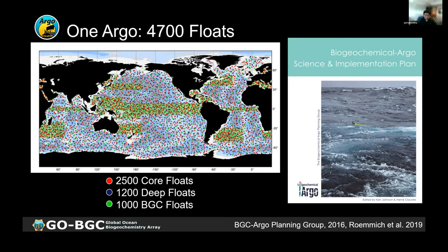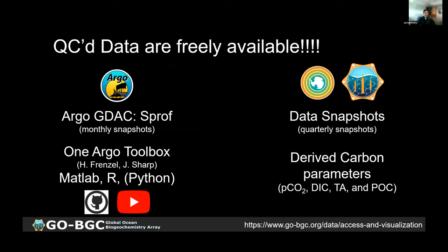The 1,000-float target size is explained in the Biogeochemical Argo Science and Implementation Plan — a really detailed and thorough document. I highly recommend it if you're interested in system design. The data from Argo and BGC Argo are QC'd and freely available, with the main access point being the Argo GDAC, the Global Data Assembly Center. Please use the SPROF — the synthetic profile — where the pressure axis has been merged for core and BGC parameters.